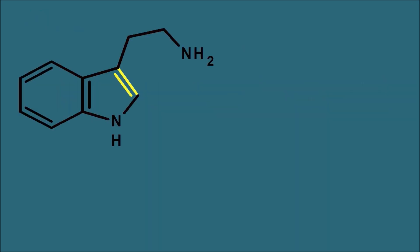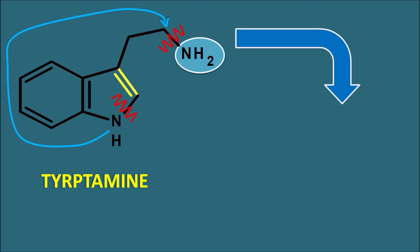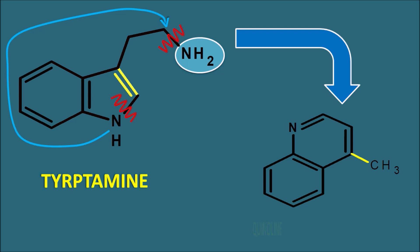Next are the quinoline alkaloids. Tryptophan can also act as a precursor for quinoline alkaloids. Tryptophan is converted to tryptamine, and then the amine group is removed by cleavage. Another cleavage takes place at the ring of tryptamine, and when the ring is opened, the nitrogen rotates and attacks at another position. In this way, a 6-plus-6 membered nucleus with nitrogen — the quinoline nucleus — is formed. So the 6-plus-5 membered indole ring system of tryptamine is rearranged to a 6-plus-6 membered quinoline ring system.